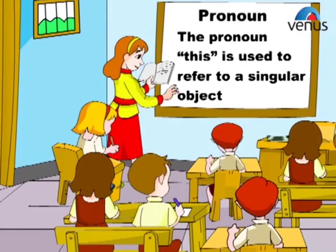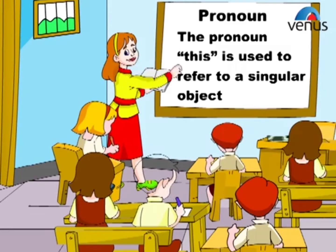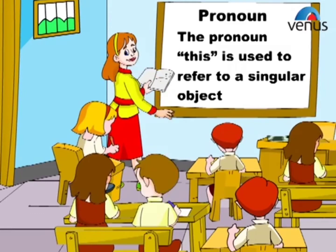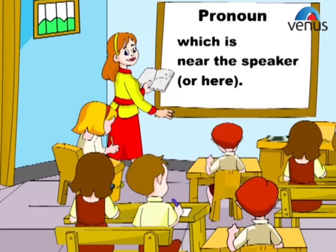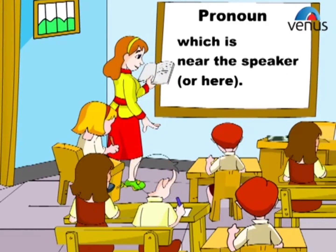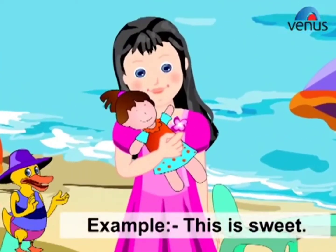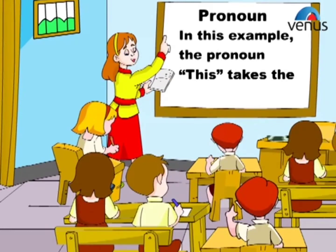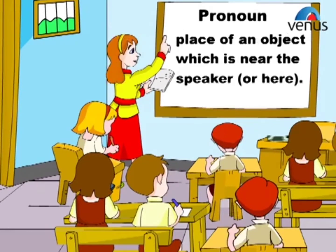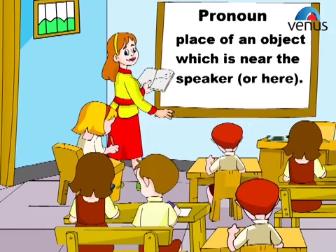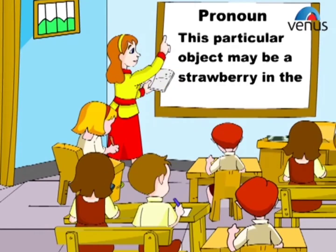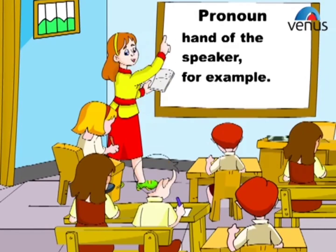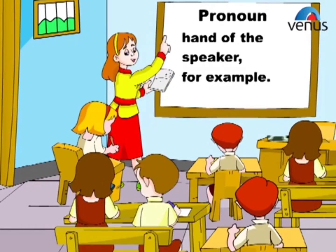The pronoun 'this' is used to refer to a singular object which is near the speaker, or here. Example: This is sweet. In this example, the pronoun 'this' takes the place of an object which is near the speaker. This particular object may be a strawberry in the hand of the speaker, for example.